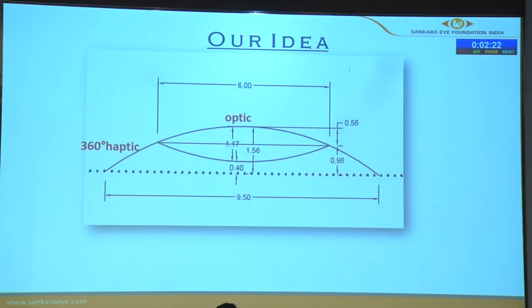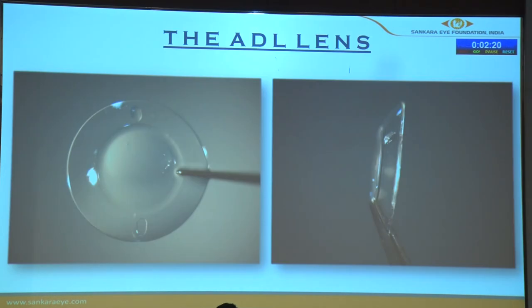So this was our design — a radial lens with a central optic surrounded by a 360-degree haptic angulated at 120 degrees.